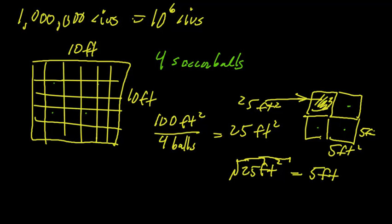So what that means is that the distance, the average distance between one point, one ball, and the next one is going to be 5 feet. Now, so let's apply the same logic to the civilizations.